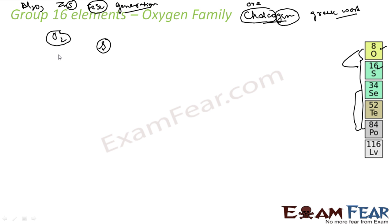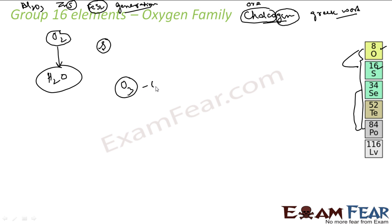Oxygen is very important for our survival — it is used in respiration. The second most important thing for survival is water, H2O, which also contains oxygen. Air and water are the two important things for survival, and in both we have oxygen. Oxygen is also used in the steel industry.